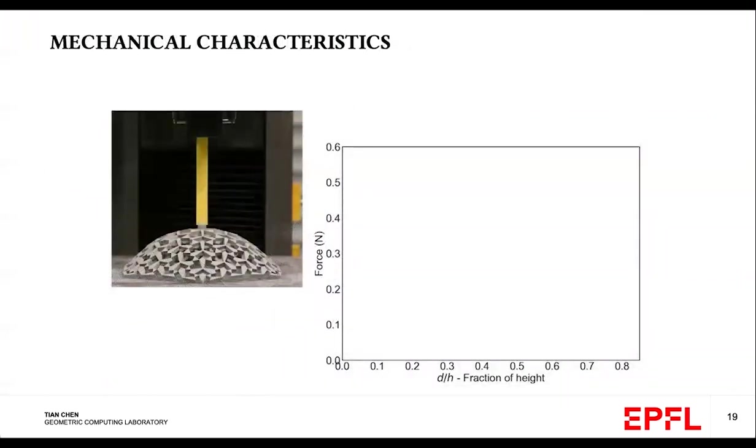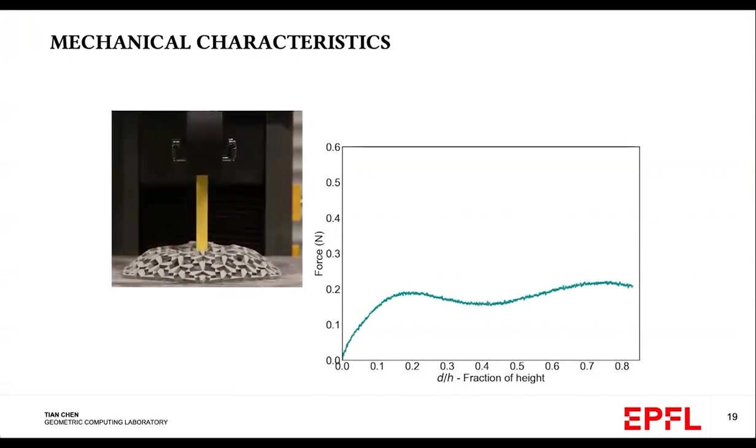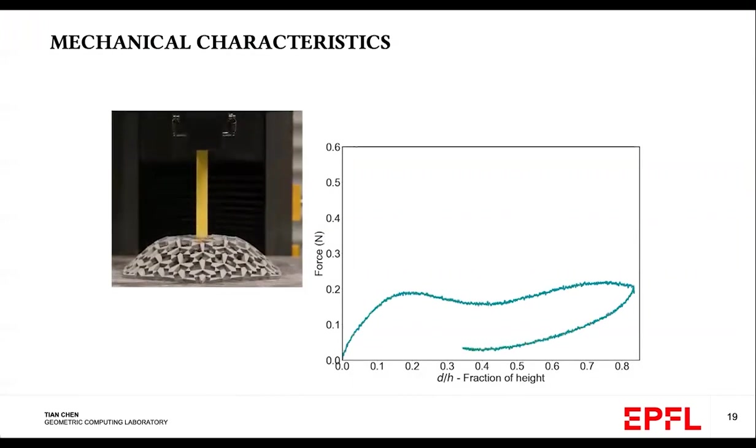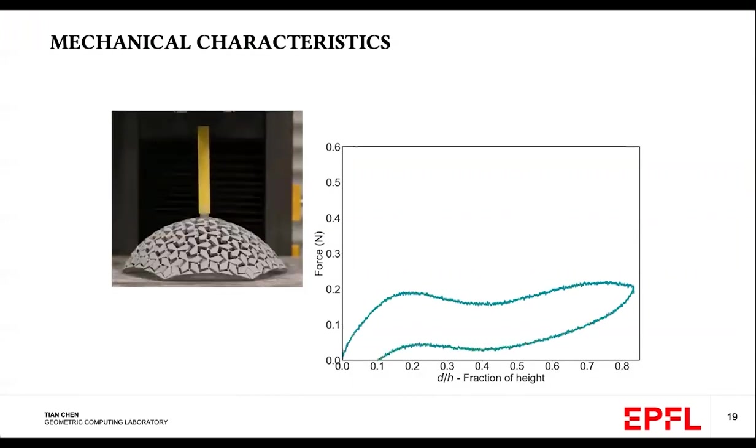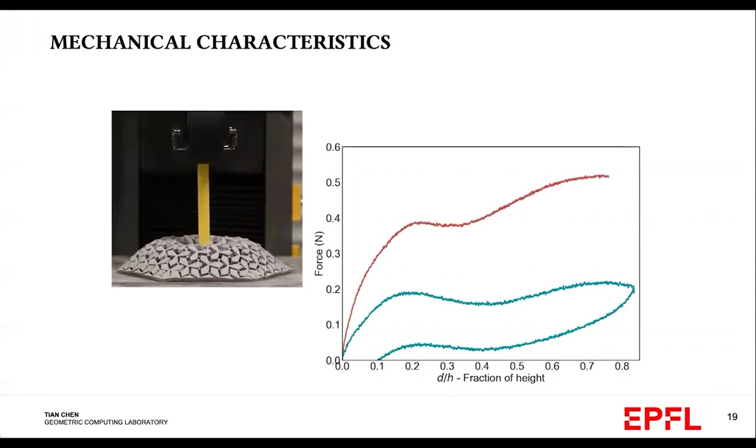We mechanically validate the stability in the deployed state and the difference in stiffness between the two geometries. We use an indenter to press down the middle of the spherical cap. And we note that even at an indentation that's almost 100% the height of the spherical cap, both geometries return back to its original state. And secondly, one exhibits much higher stiffness than the other.